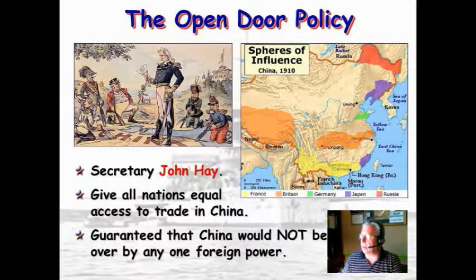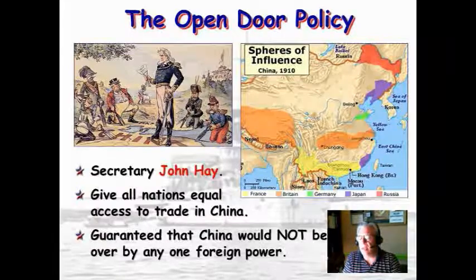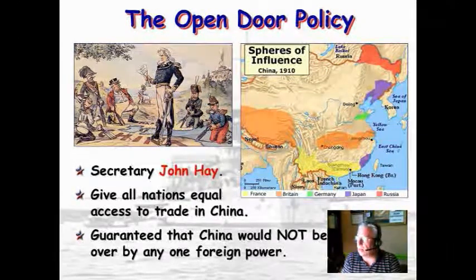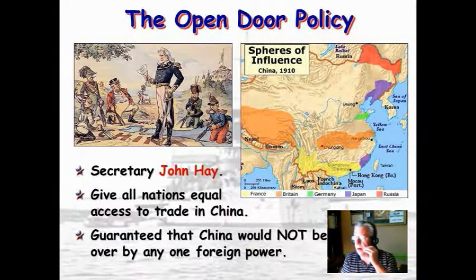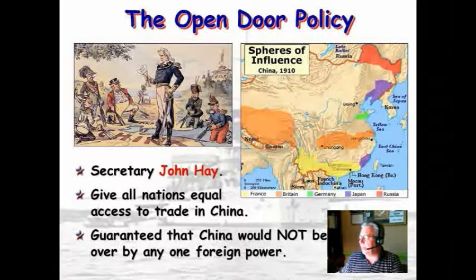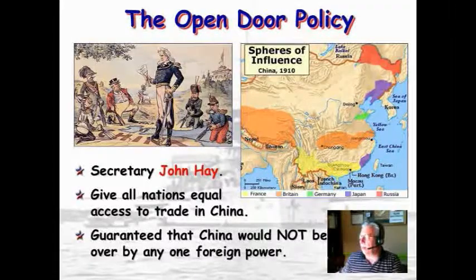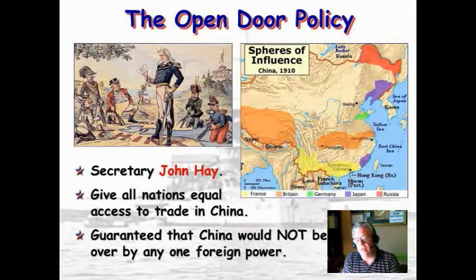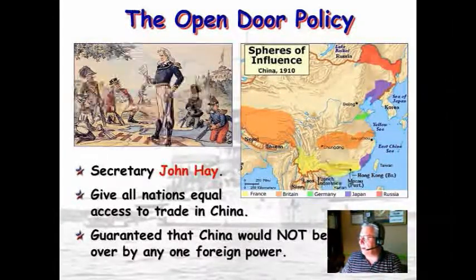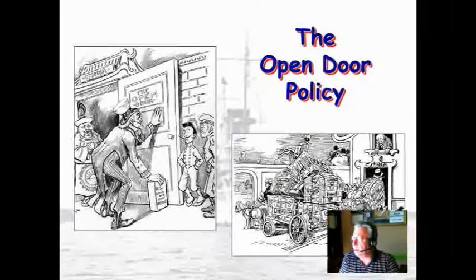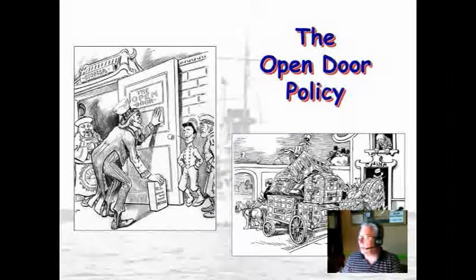So we were there in China, and the open-door policy — you've heard me say a sphere of influence — the United States had opened their sphere of influence, which made them more imperialistic after the Spanish-American War, in Cuba and in the Philippines. The open-door policy was meant to give all nations equal access to trade in China. Some were cut off, whereas Great Britain occupied Hong Kong in China. It guaranteed that China would not be taken over by one foreign power, which is what the Boxer Rebellion was about — they didn't want a foreign power taking over.